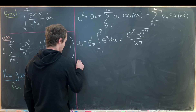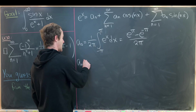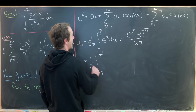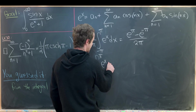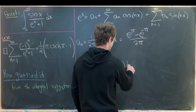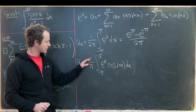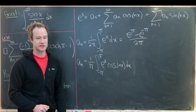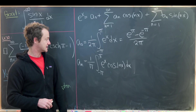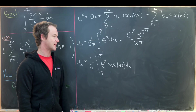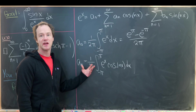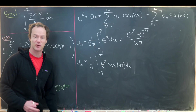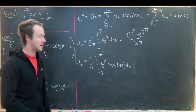Now we calculate aₙ. It is equal to 1 over π times the integral from minus π to π of e to the x cosine nx dx. Notice here we divide by π instead of 2π — that's just how these things are constructed. I'm going to calculate this integral using a fairly stylized approach, something you'd arrive at after working through it once or twice.